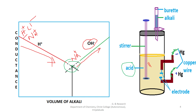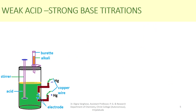This is the end point for the strong acid-strong base titration. Now we are discussing the weak acid-strong base titration. Here, acetic acid is titrated against sodium hydroxide. Acetic acid is a weak acid and sodium hydroxide is a strong base.